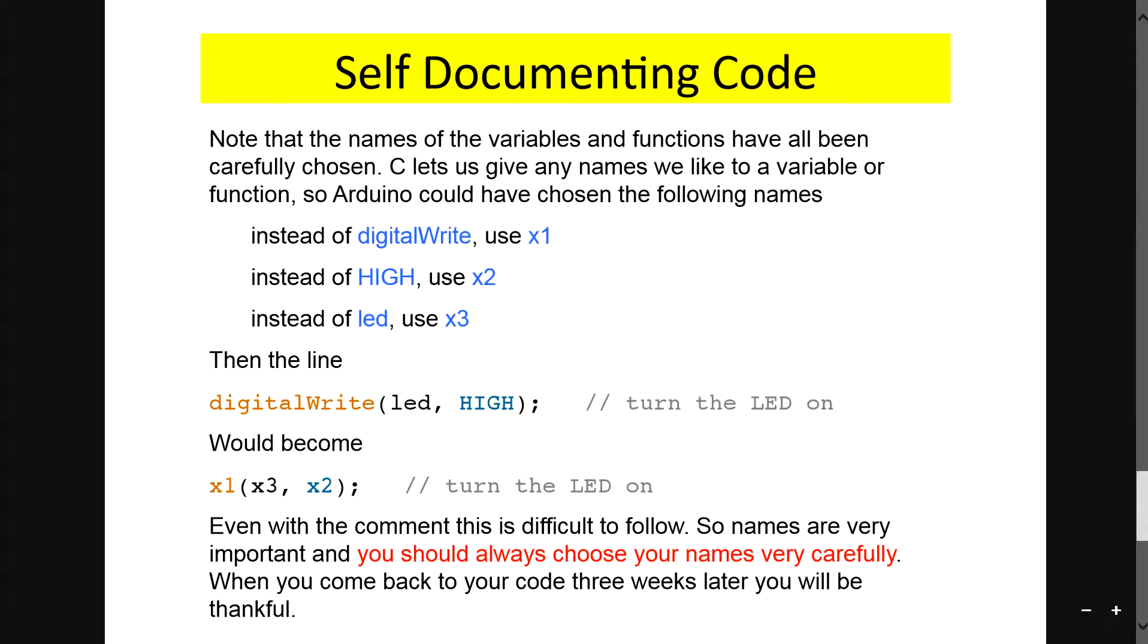Instead of the digitalWrite and the HIGH, you can actually rewrite yourself. Therefore, it's a self-documenting code. So I think it's int, you can just name as x1, equals to digital. So actually rename your command as x1, and therefore it's being reflected over here. I don't know whether it is this code initializing. Remember to put this semicolon.